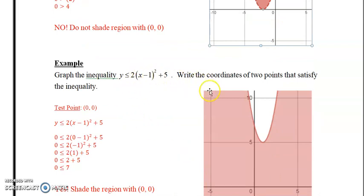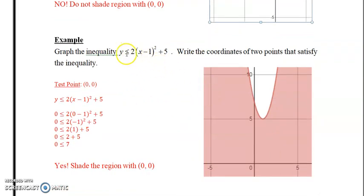So it says graph this inequality. So we graph the inequality y equals, it's in vertex form as you'll notice. So the vertex is 1 and 5. The a value is 2, so it opens upward. So it doesn't have any x-intercepts. It just has a y-intercept and a vertex, and you can shade the region.